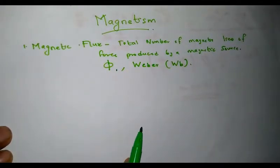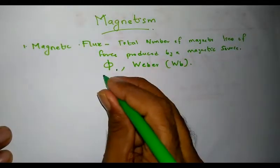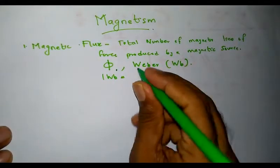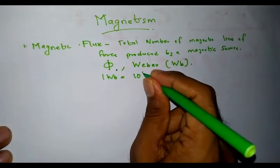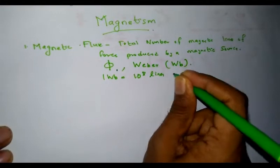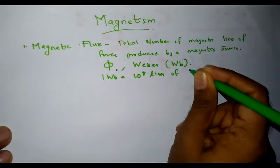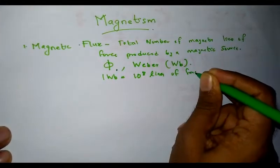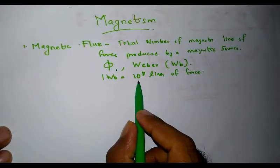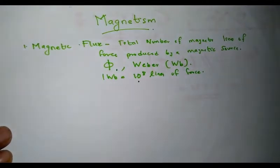The unit of magnetic flux is the Weber. One Weber of magnetic flux is equal to 10 raised to the power 8 lines of magnetic force.